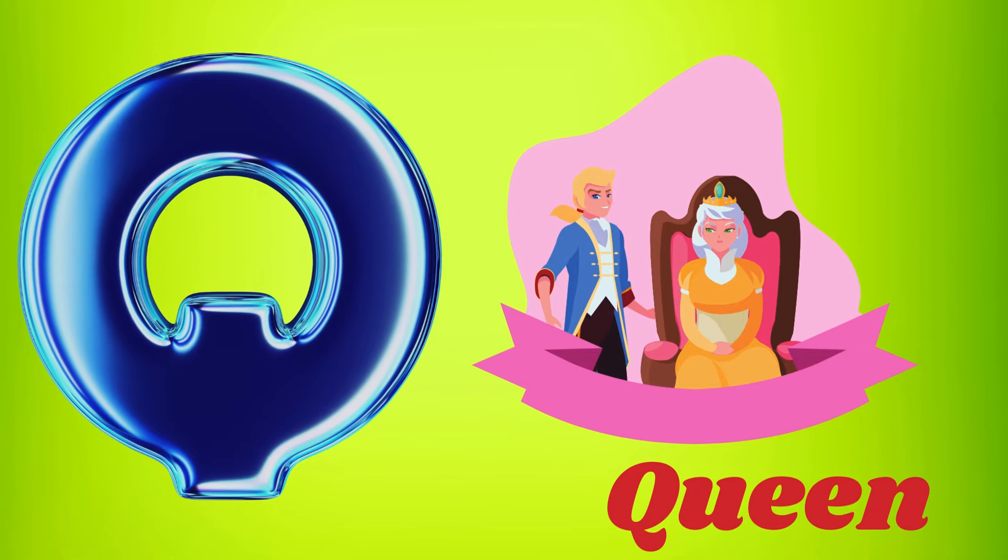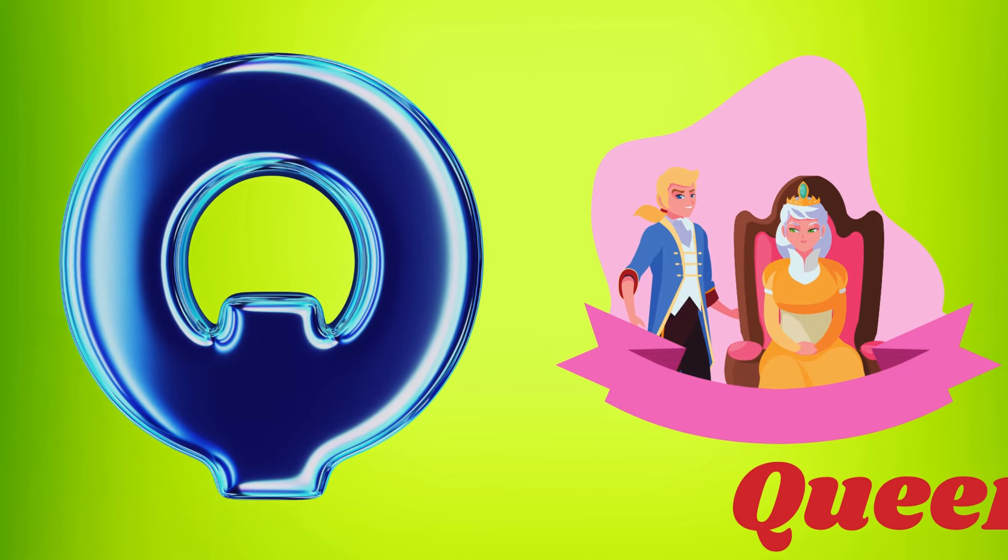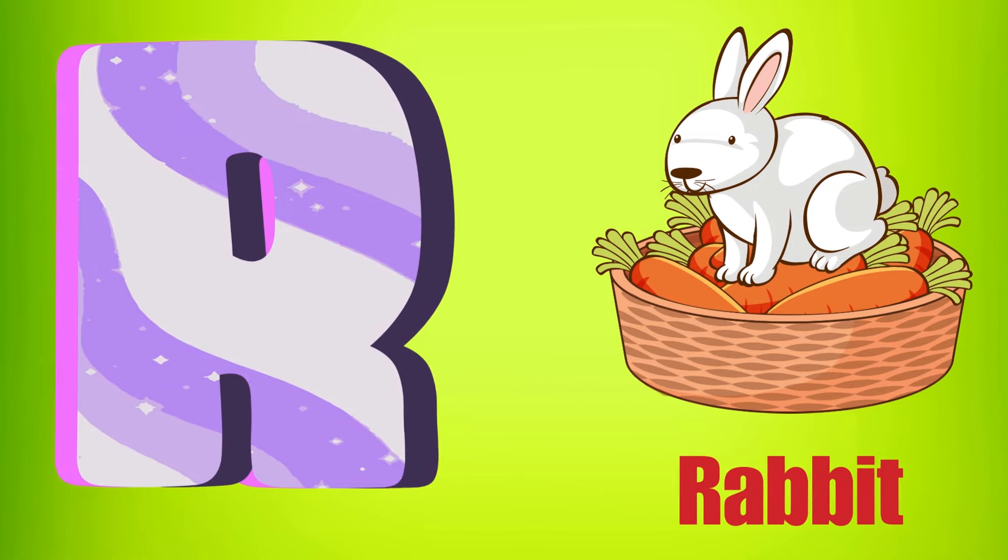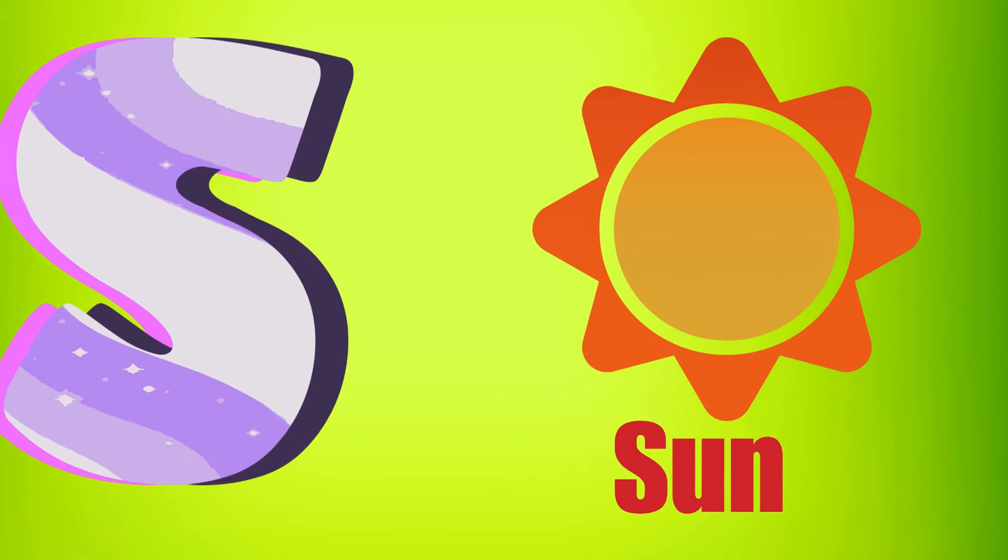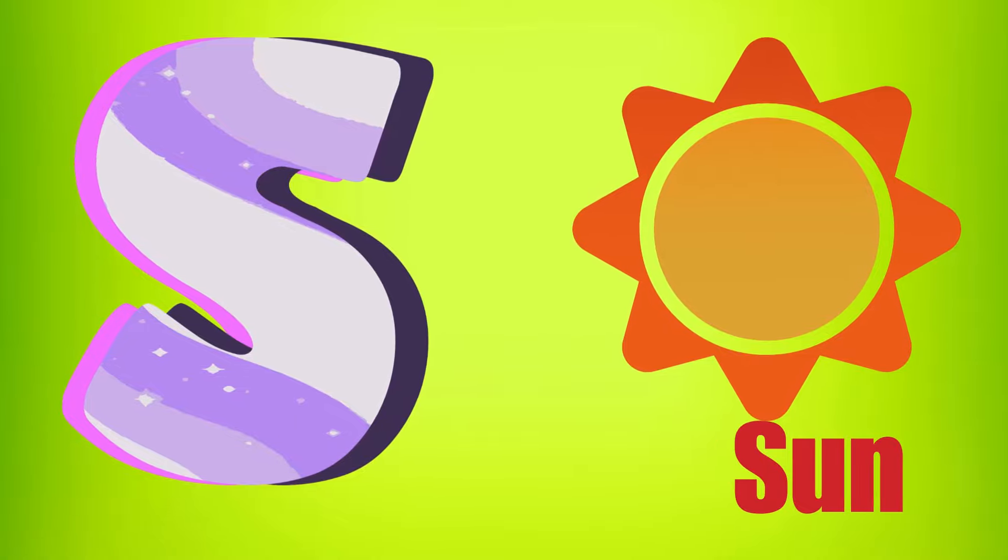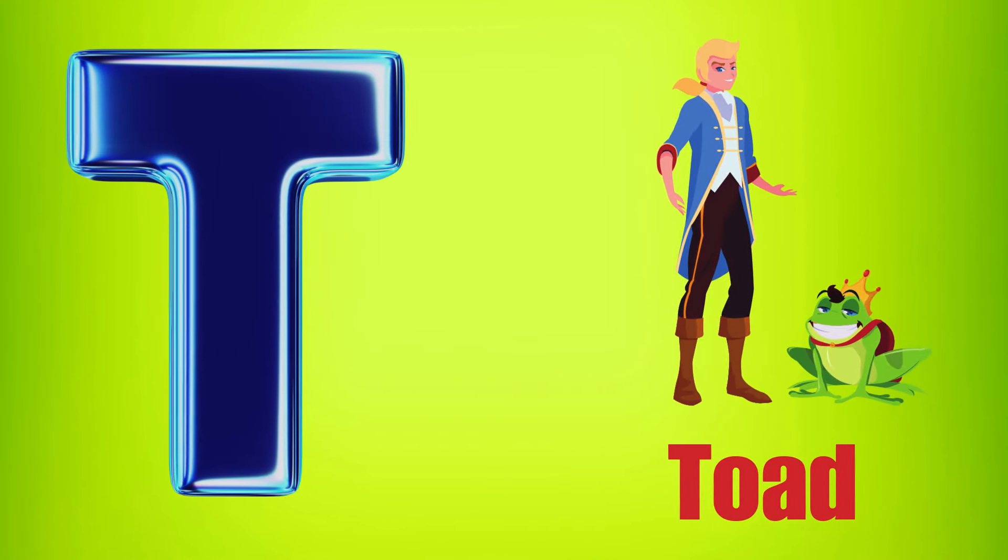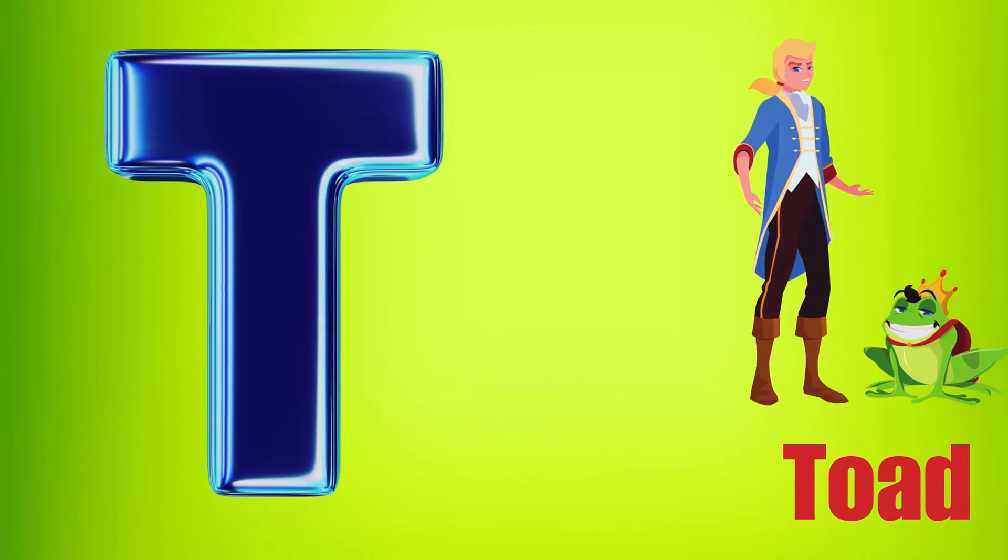Q is for Queen, Q-Q-Queen. R is for Rabbit, R-R-R-Rabbit. S is for Sun, S-S-Sun. T is for Toad, T-T-Toad.